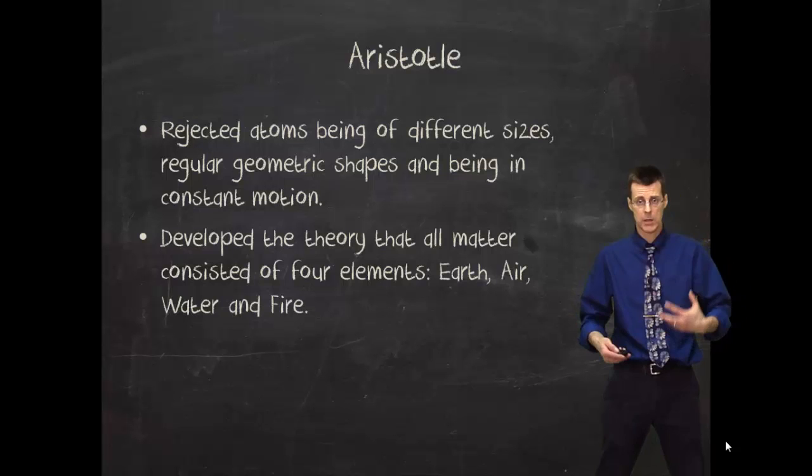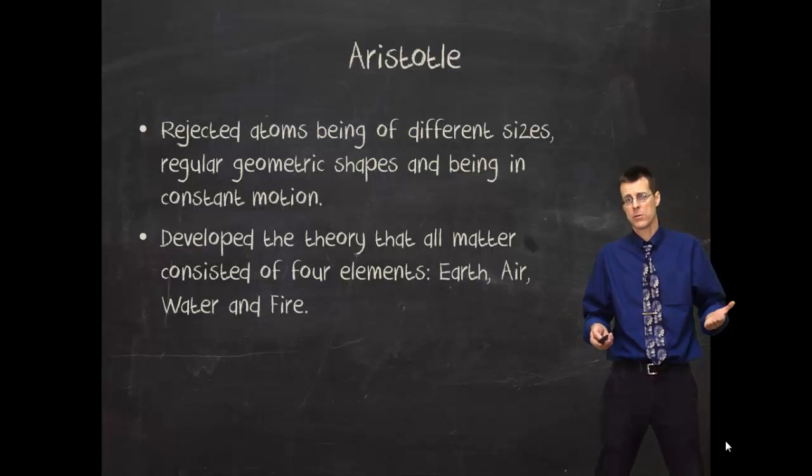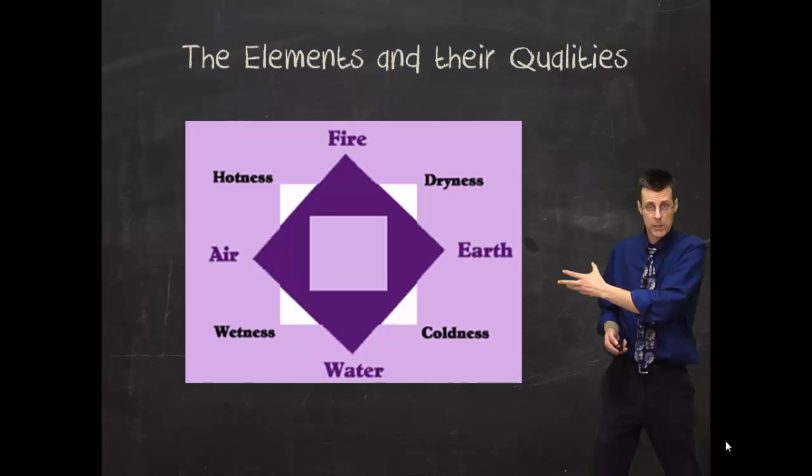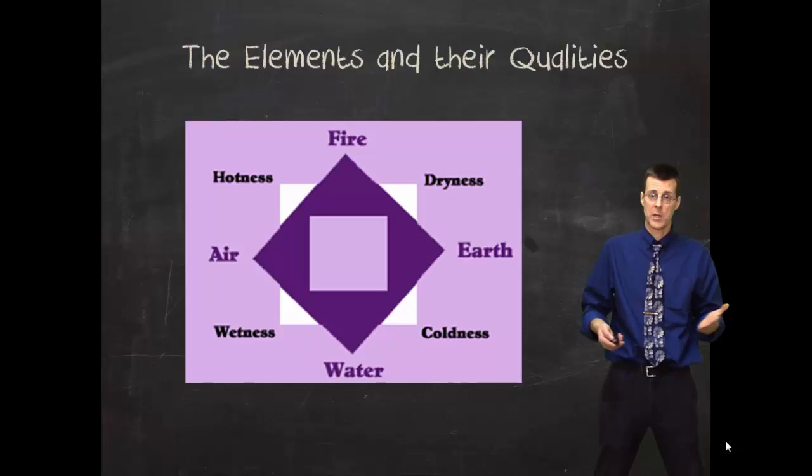And his model then was able to explain certain things. His periodic table would look something like this. But without going into it in detail, he was able to explain certain observable things with his theory. So his theory, in some cases, worked.